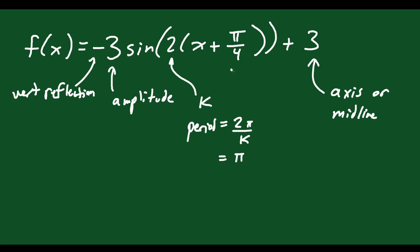And then you have π/4, which is your phase shift. So this whole graph is moving π/4 to the left, because it's plus.